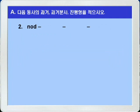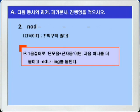2번, nod를 보죠. Nod는 끄덕이다 혹은 꾸벅꾸벅 졸다라는 뜻입니다. Nod는 규칙 변화를 하는 이음절 동사인데, 단모음 플러스 단자음으로 끝나죠. 이런 경우 끝자음을 하나 더 붙이고 ED와 ING를 붙여야 하니까, 끝자음 D를 하나 더 붙여서 과거형은 nodded, 과거 분사형도 nodded, 진행형은 nodding이 되겠습니다.